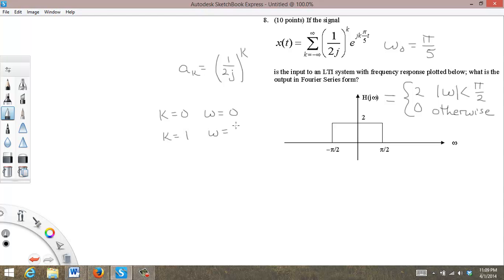And k equal to 2, we have omega is equal to 2 pi over 5. And k is equal to 3 times pi over 5.